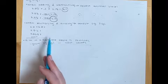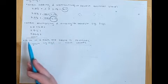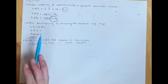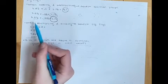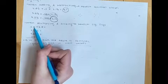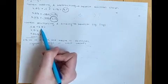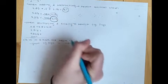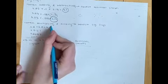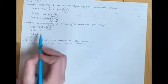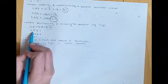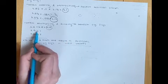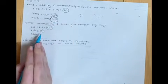Moving on to multiplying and dividing: your answer should match the number with the fewest sig figs. For example, if both numbers have two significant figures, the answer is 4.0 — also two sig figs. When dividing, if both numbers have one sig fig, then 2 ÷ 2 = 1, which also has one sig fig. For 2.0 ÷ 2: 2.0 has two sig figs, 2 has one — so the answer is 1, matching the one significant figure.